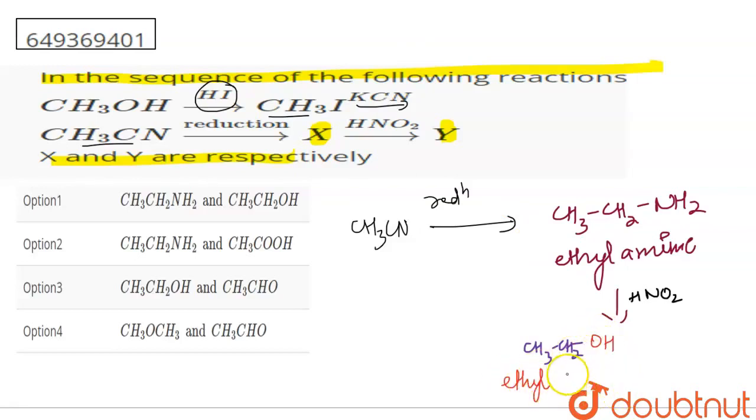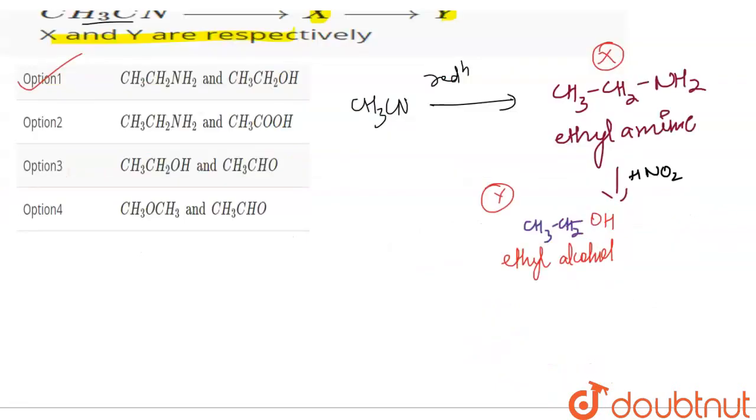So ethyl alcohol will form. So the option is, this is my X and this is my Y. That is option 1, which is correct. Thank you.